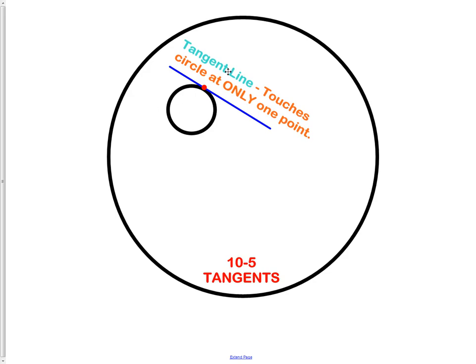A tangent line is a line which touches a circle at only one point. You'll notice the line here goes right next to the circle and it touches it just at that one point represented by the red dot and then continues on.